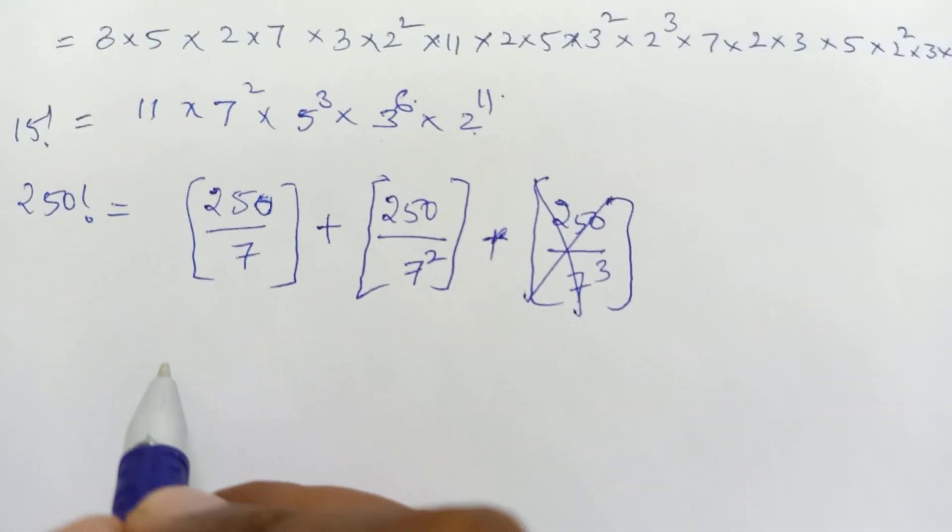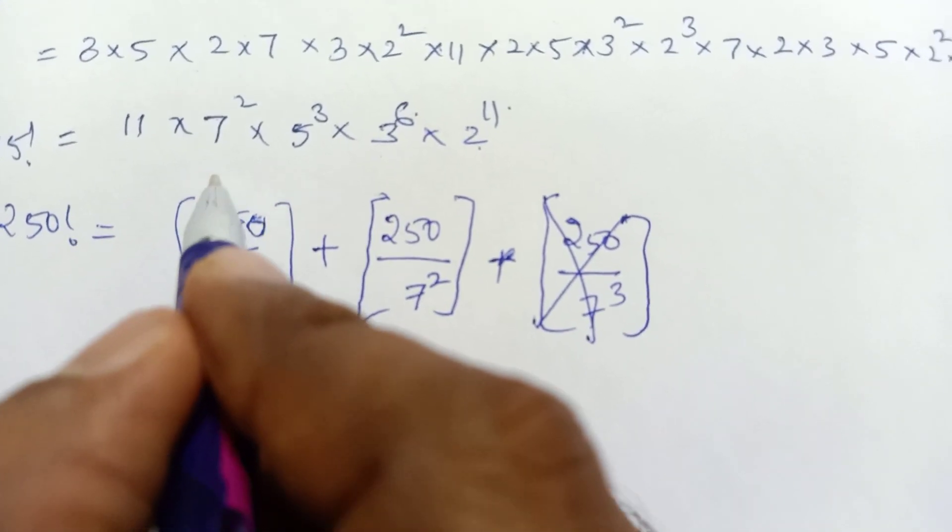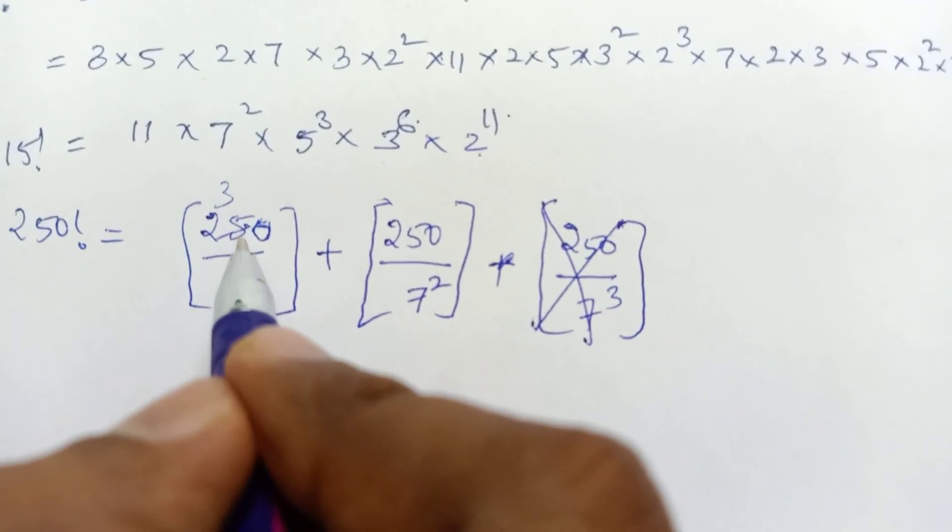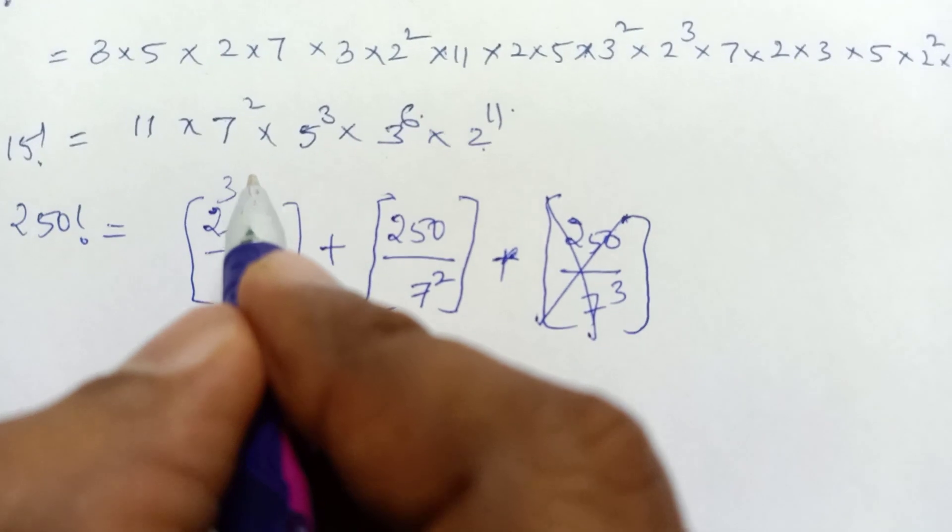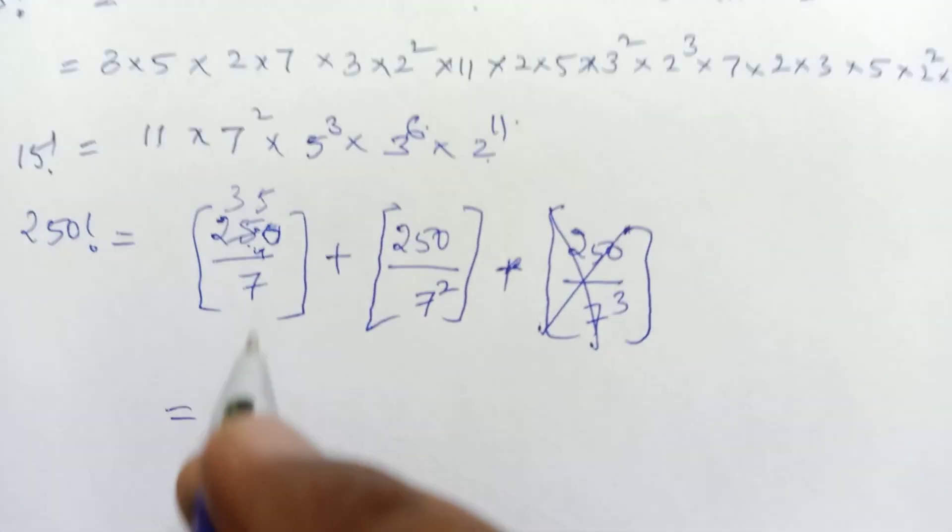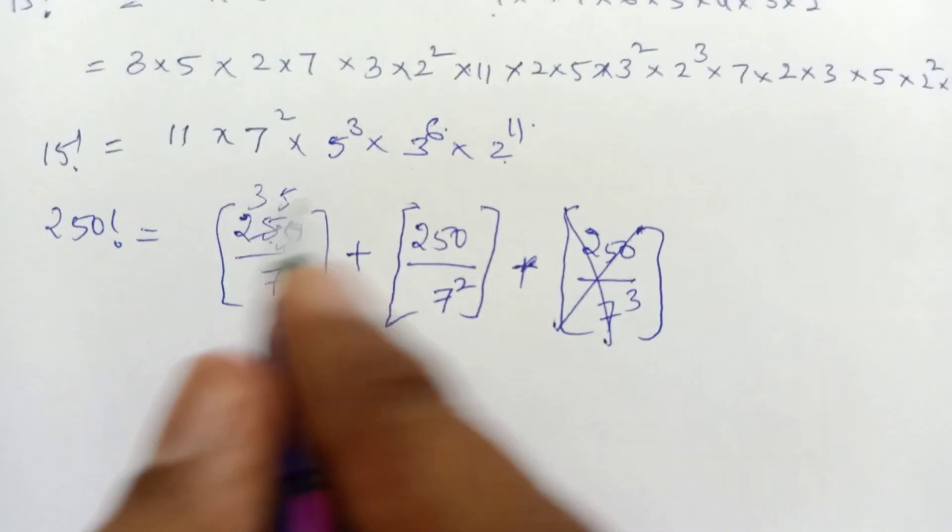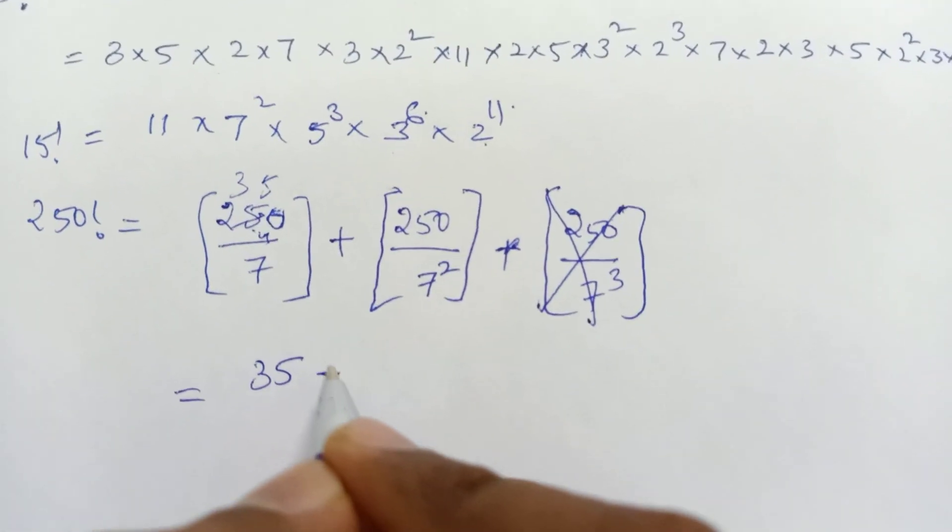250 divided by 7: 7 times 3 is 21, remainder 4. 7 times 5 is 35, giving us 35 with a remainder. So the integer value is 35. The answer is 35.